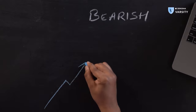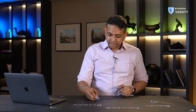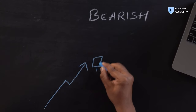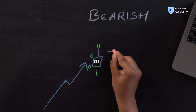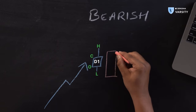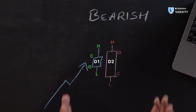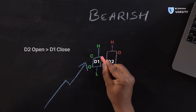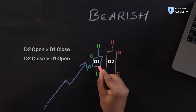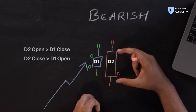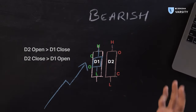Now let's look at the bearish engulfing. It's exactly the same — it just reverses a bit. You need a previous bullish trend, and then you have the market going up. The bulls are in control. You get a slight gap up opening and the bar actually engulfs the previous real body — in this case it also engulfs the previous wick. Notice that the open of day two is greater than the close of day one, and the close of day two is greater than the open of day one. This means the real body of day two has engulfed the previous day's real body, and technical analysts expect the trend to reverse from here.